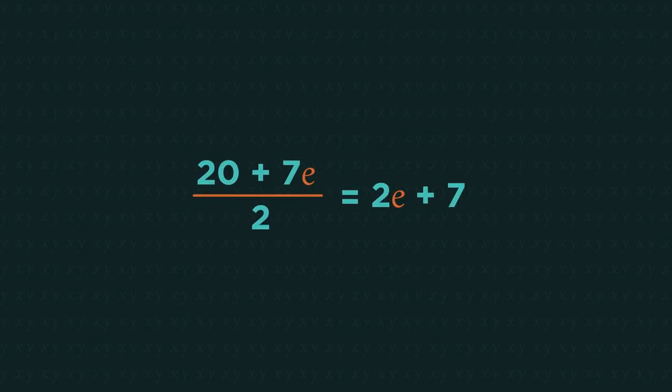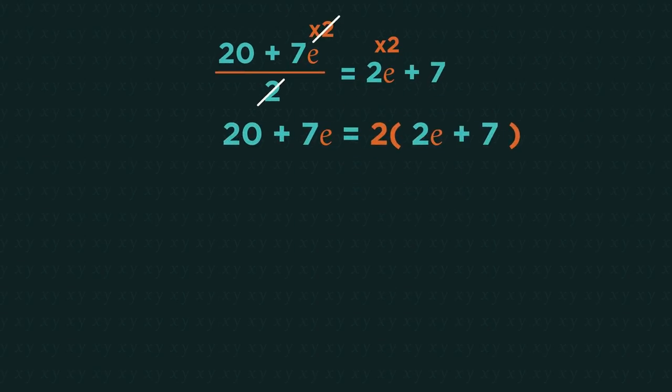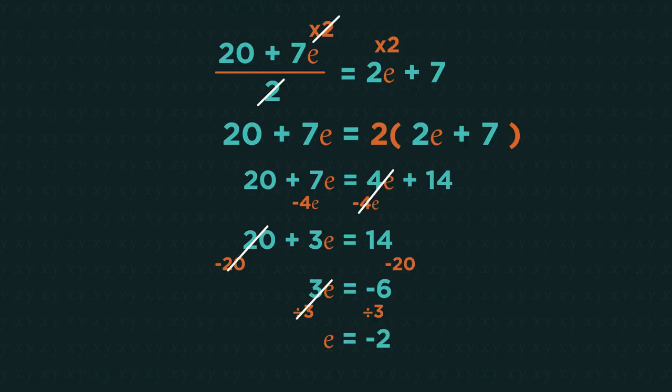For this one, we want to start by multiplying up the 2. But we need to multiply the whole of this side by 2, so put brackets around it. Then you just expand the brackets and carry on as normal.